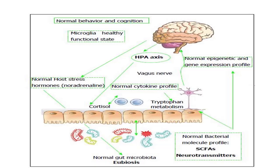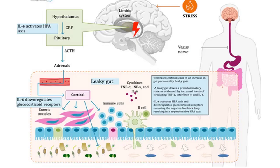But during stressful conditions — be it physical stress or psychological stress — the harmony between gut and the brain is disturbed, and it continues as a vicious cycle during chronic stress. Let's see what happens to the gut-brain axis during chronic stress. Our immediate response to stress is the fight-and-flight reaction due to activation of the sympathetic nervous system, which results in the secretion of epinephrine and norepinephrine. And as a result of the secondary response, the HPA axis is activated.